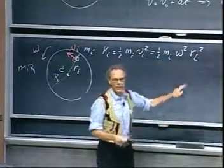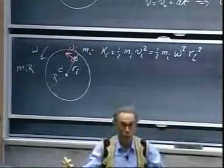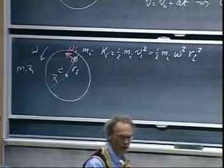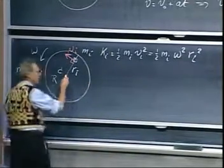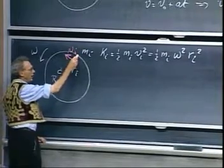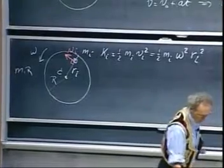The nice thing about writing it this way is that omega, the angular velocity, is the same for all points of the disk, whereas the velocity is not, because the velocity of a point very close to the center is very low. The velocity here is very high. And so by going to omega, we don't have that problem anymore.